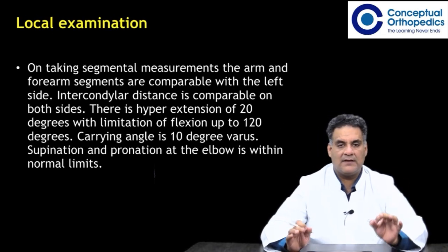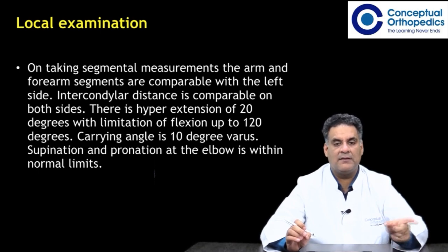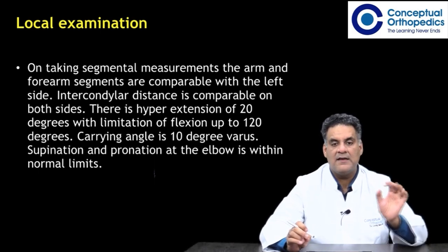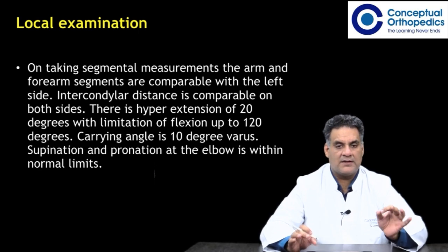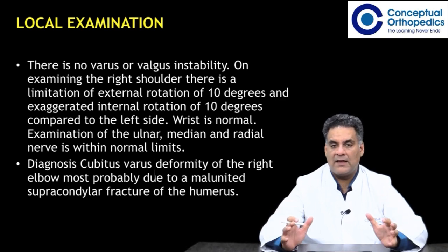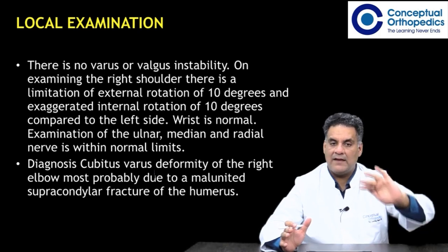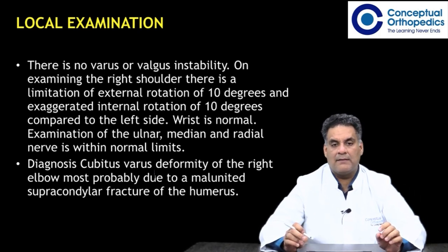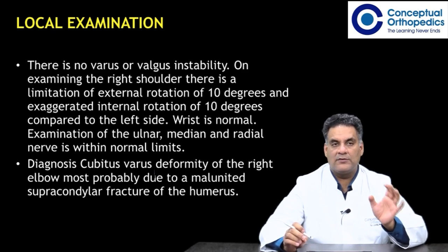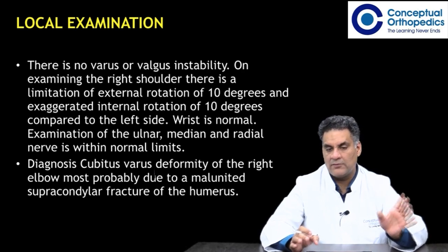On taking segmental measurements, the arm and forearm segments are comparable with the left side. Intercondylar distance is comparable on both sides. There is hyperextension of 20 degrees with limitation of flexion up to 120 degrees. Carrying angle is 10 degrees of varus. Supination and pronation are within normal limits. There is no varus or valgus instability. On examining the right shoulder, there is limitation of external rotation of 10 degrees and internal rotation is exaggerated compared to the left side. Wrist is normal. Ulnar, median, and radial nerves are within normal limits. Diagnosis is cubitus varus deformity of the right elbow, most probably due to malunited supracondylar fracture of humerus, which is non-progressive.